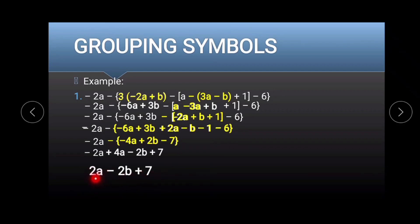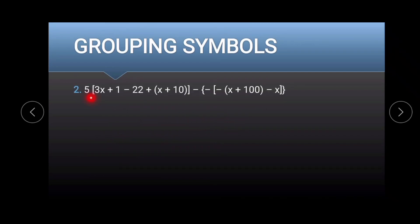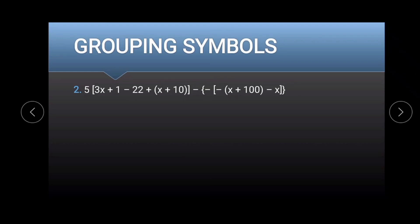Let's have another example. We have 5 multiplied to 3x plus 1 minus 22 plus x plus 10 minus x plus 10 minus x. Again, we go first with parentheses. We have x plus 10 and we distribute negative 2x plus 100.